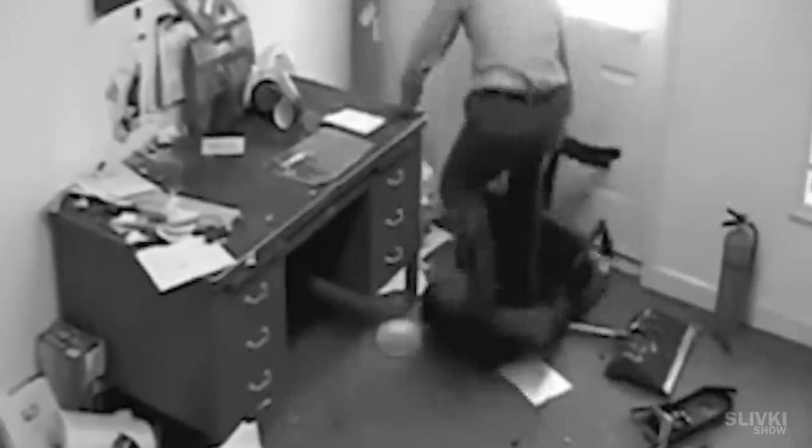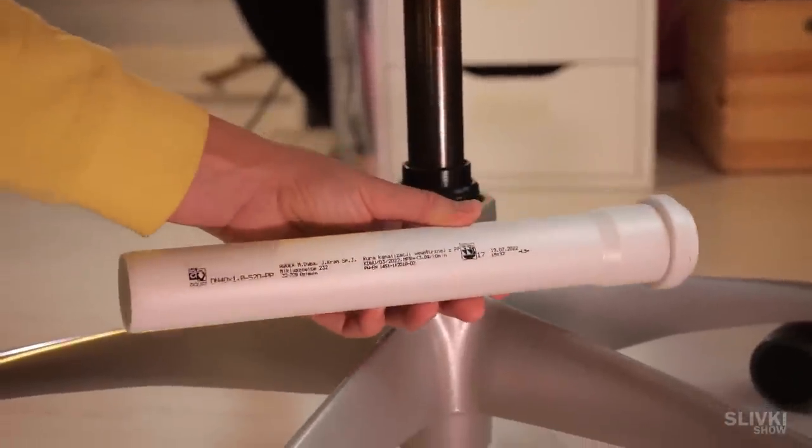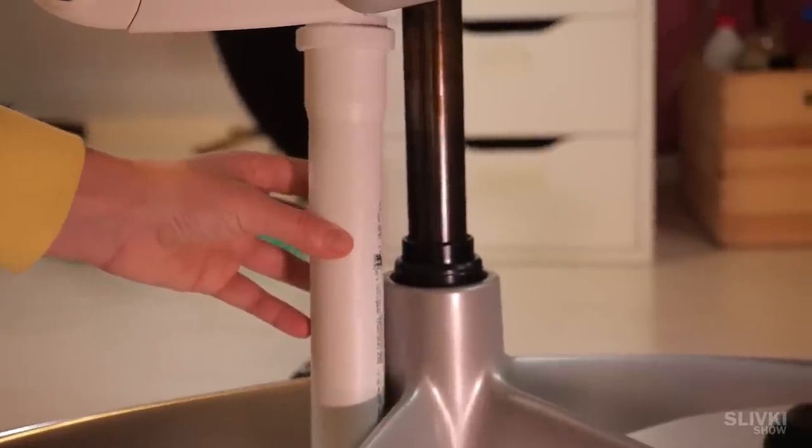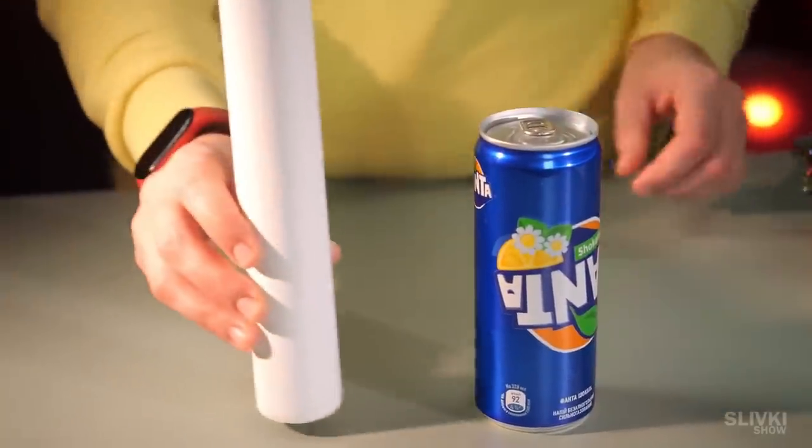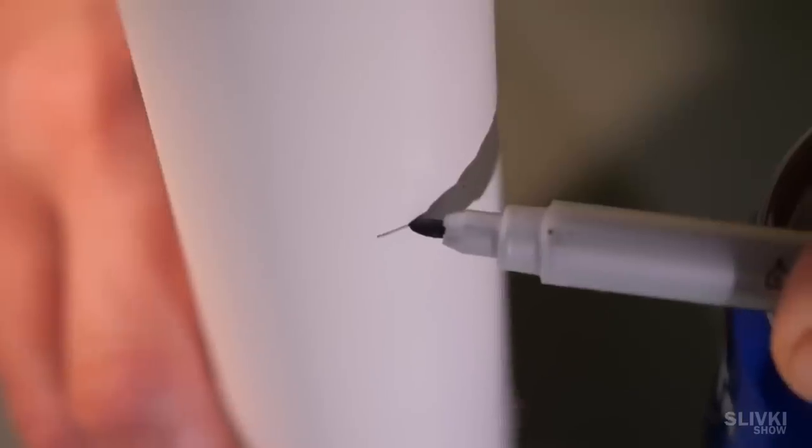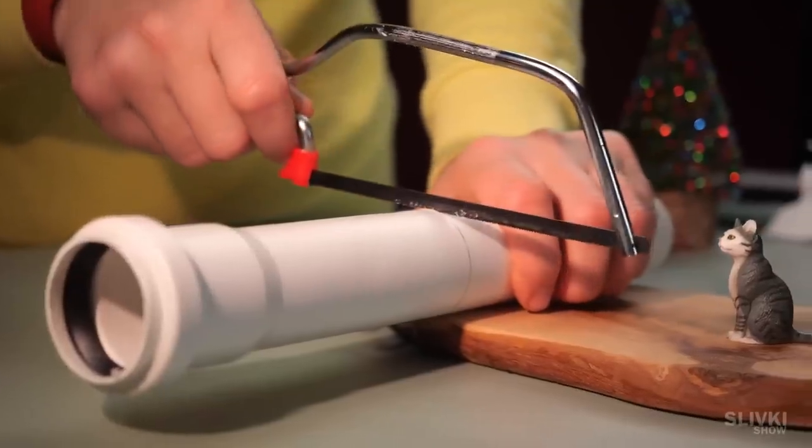After changing so many chairs, I found a simple solution, for which we need an ordinary sewage pipe, the inner diameter of which is about the same as the diameter of the chair tube. Using a can of Fanta and a marker pen, we need to measure the right length of the tube.